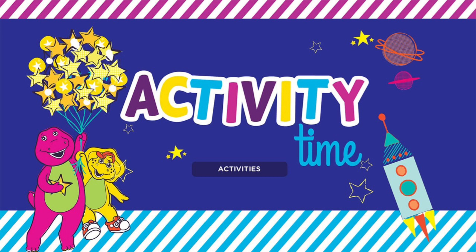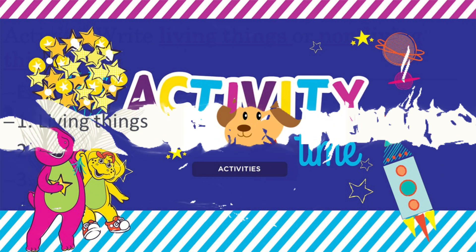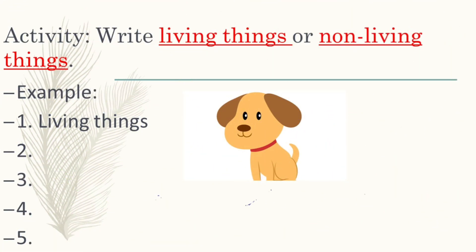For our activity, can you please get a piece of paper or notebook and write your name on the top, and number one until number five? I have here an example of how you do it. Write 'living things' or 'non-living things.' For example, I have a picture here — number one, it's a dog. So the dog is living things or non-living things? It's living things. So write the word 'living things.'